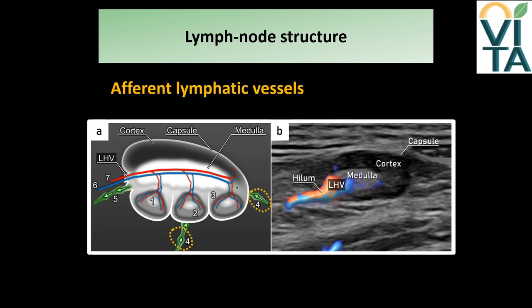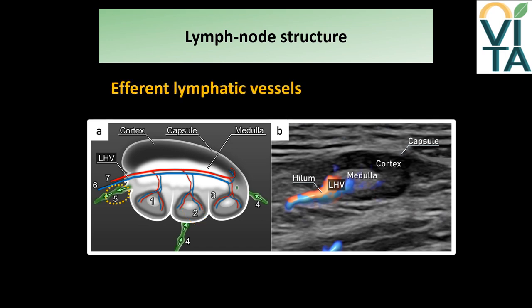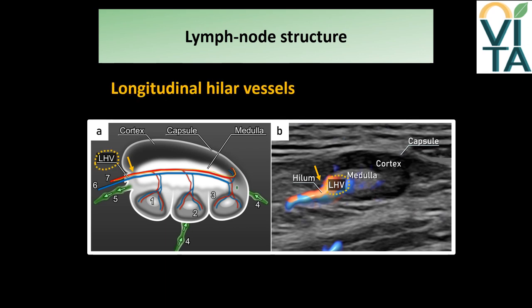Lymphatic afferent vessels enter through the capsule and open into the subcapsular sinus to the whole cortex. They converge to form larger sinuses in the medulla, then become confluent at the hilum to form the efferent vessel. On ultrasound, lymphatic vessels are not recognizable. Arterial and venous vessels usually enter and leave the lymph node at the hilum and are referred to as longitudinal hilar vessels, usually but not always parallel to the nodal long axis, then branching into the cortex.